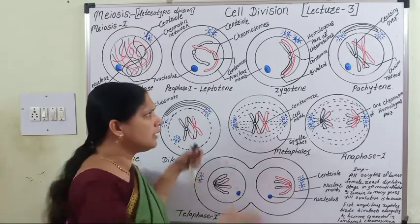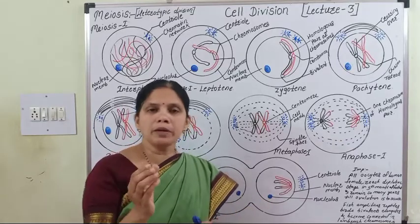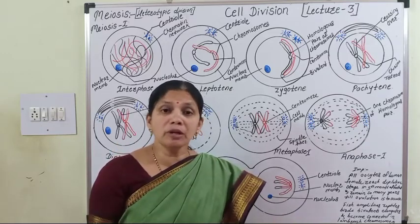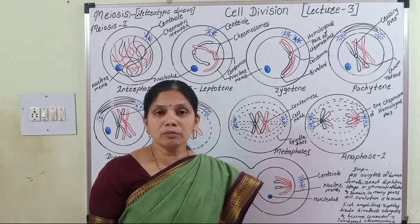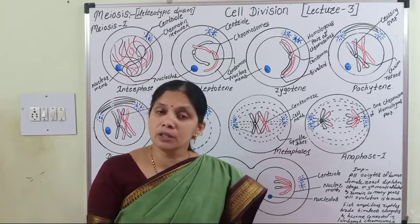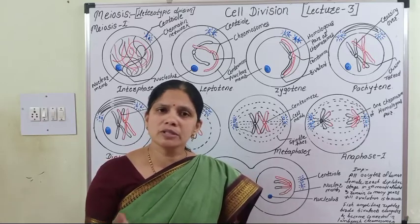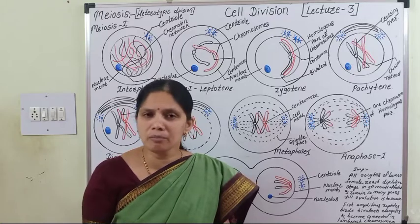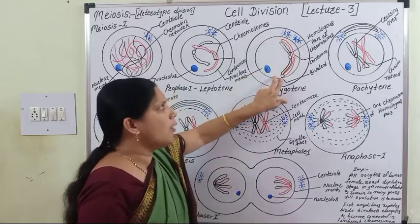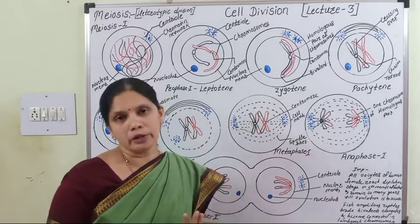In human beings with 46 chromosomes (23 from mother, 23 from father), 23 pairs of homologous chromosomes form 23 bivalents. In pea plants with 14 chromosomes (7 from each parent), 7 bivalents are formed. In this way, bivalents are formed as homologous chromosomes lie near to each other and pair during the zygotene stage.